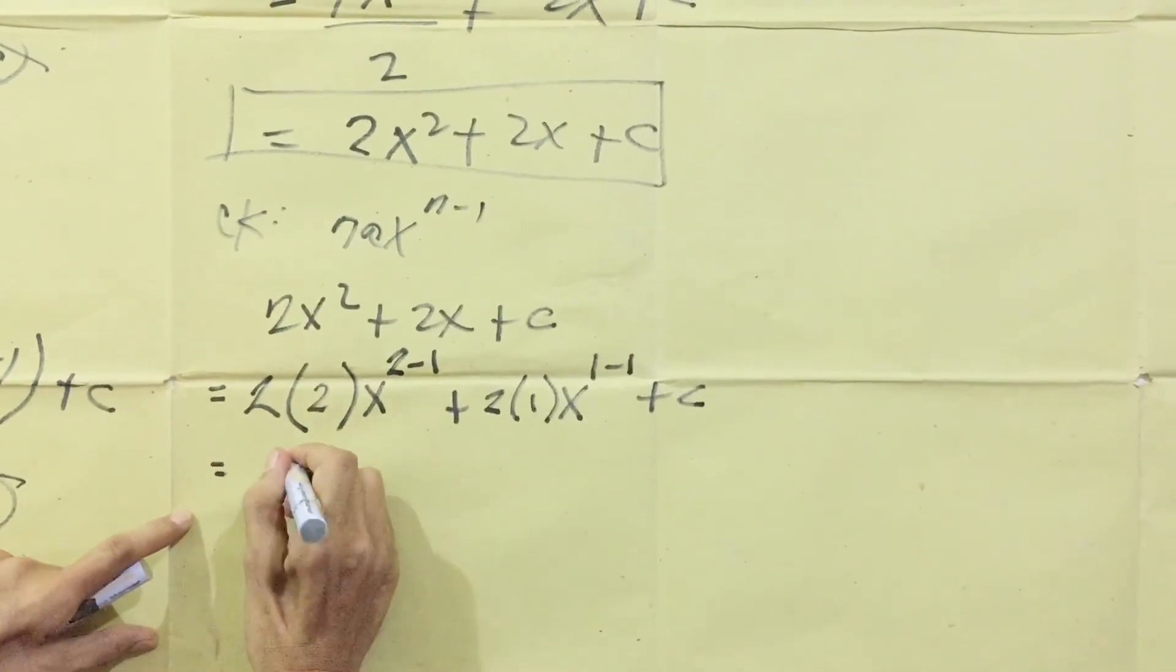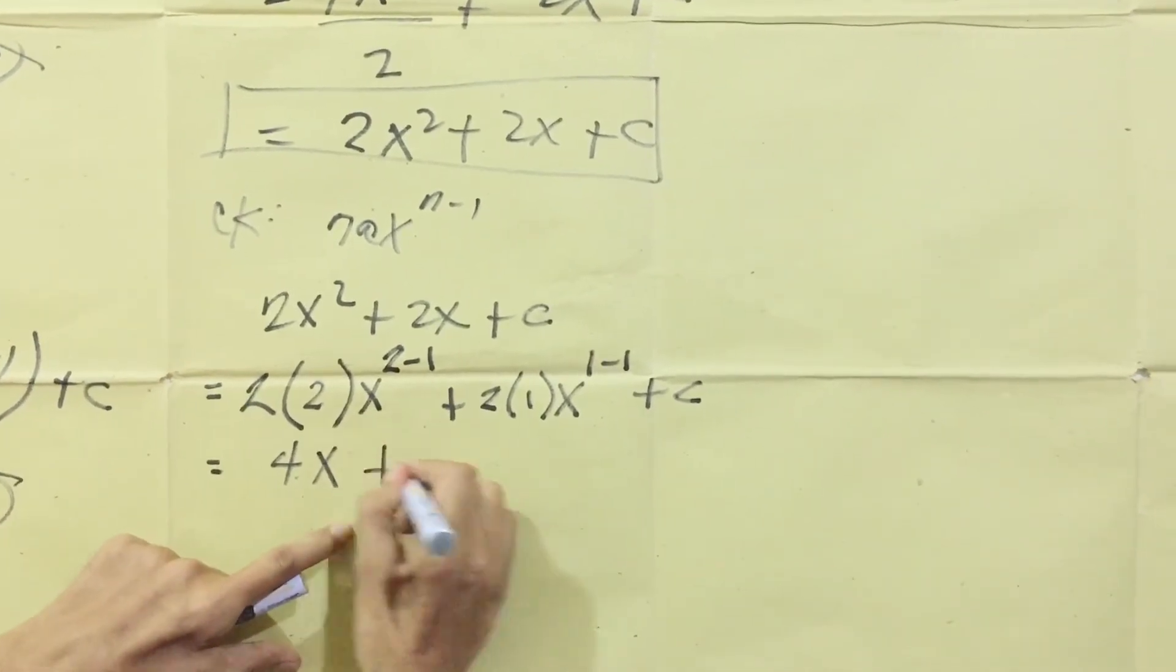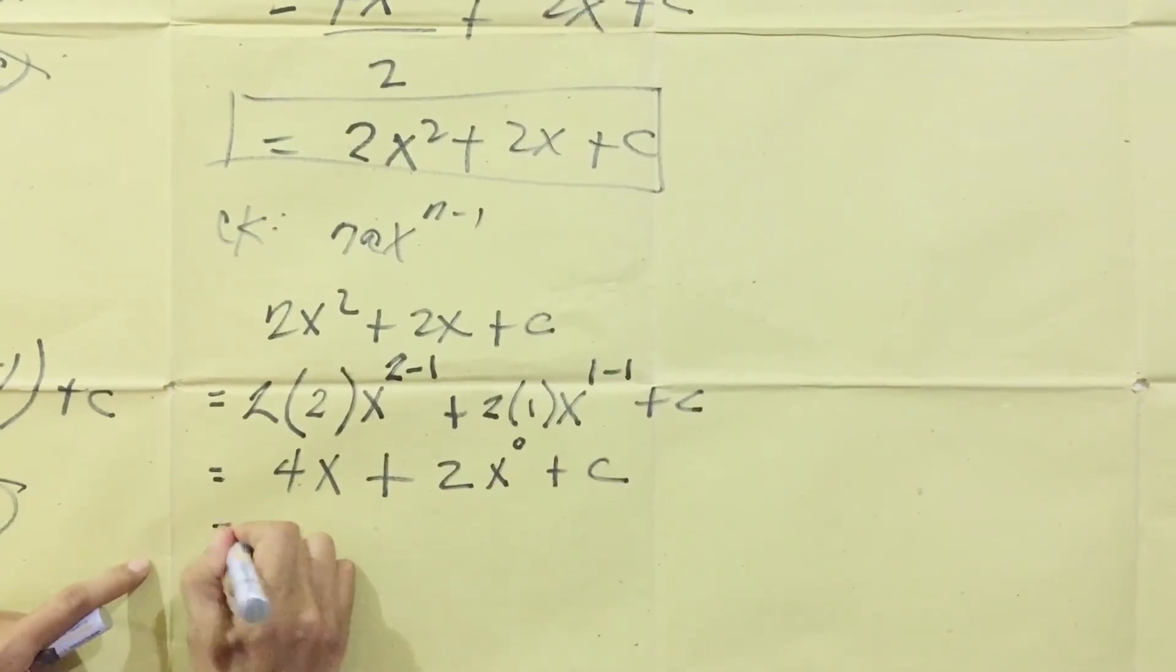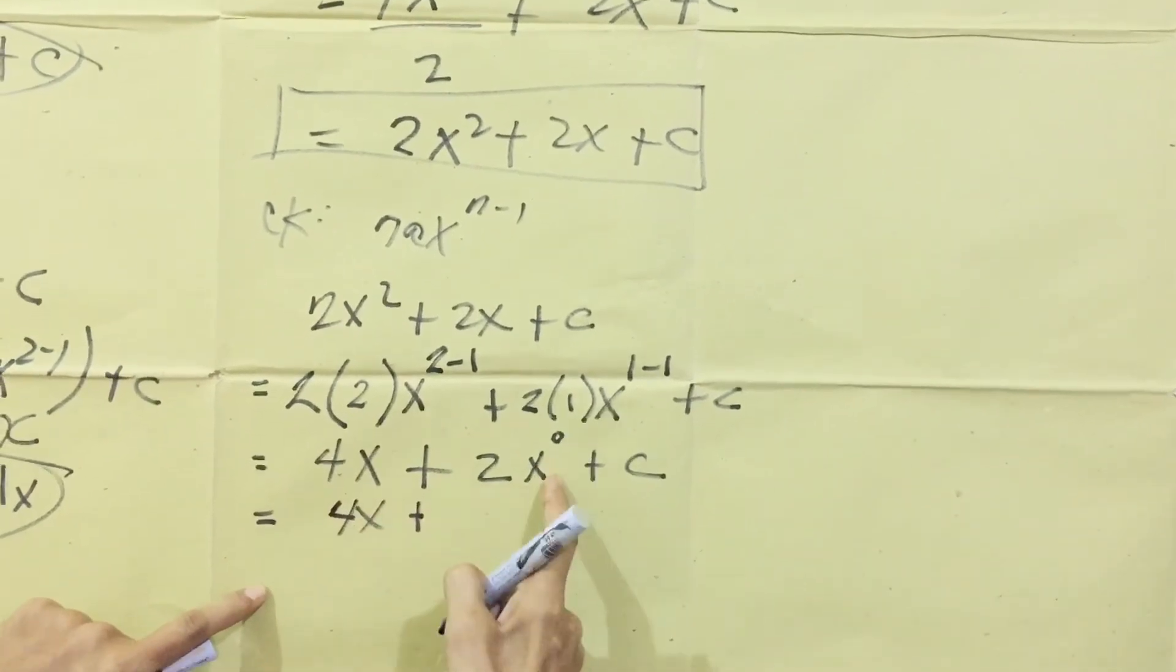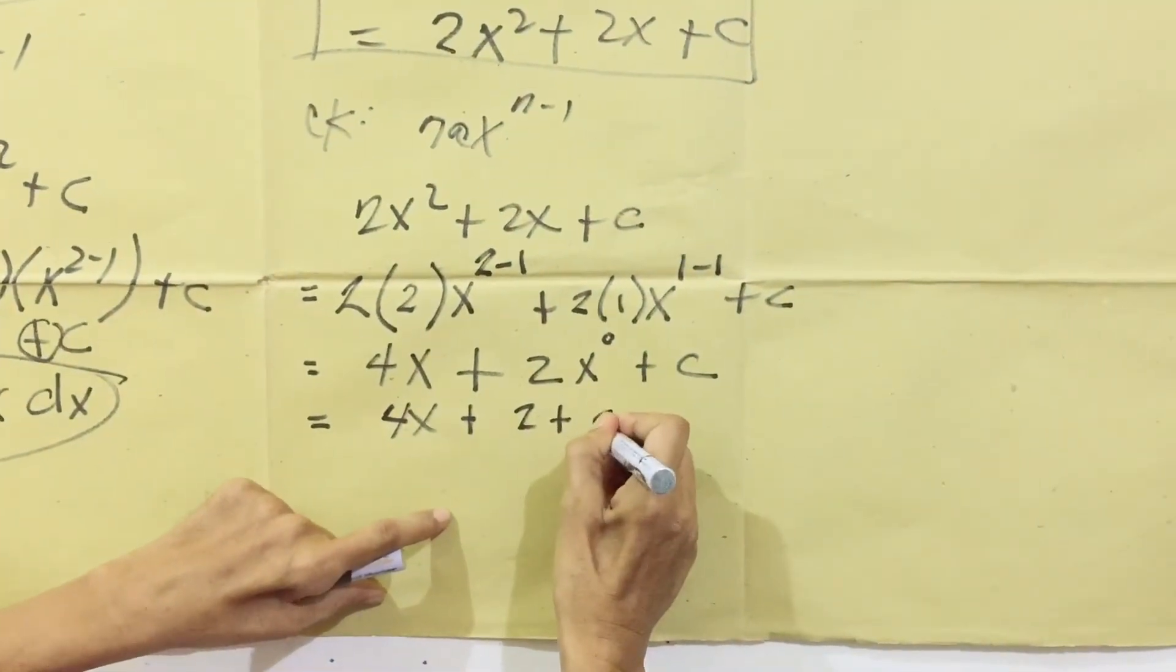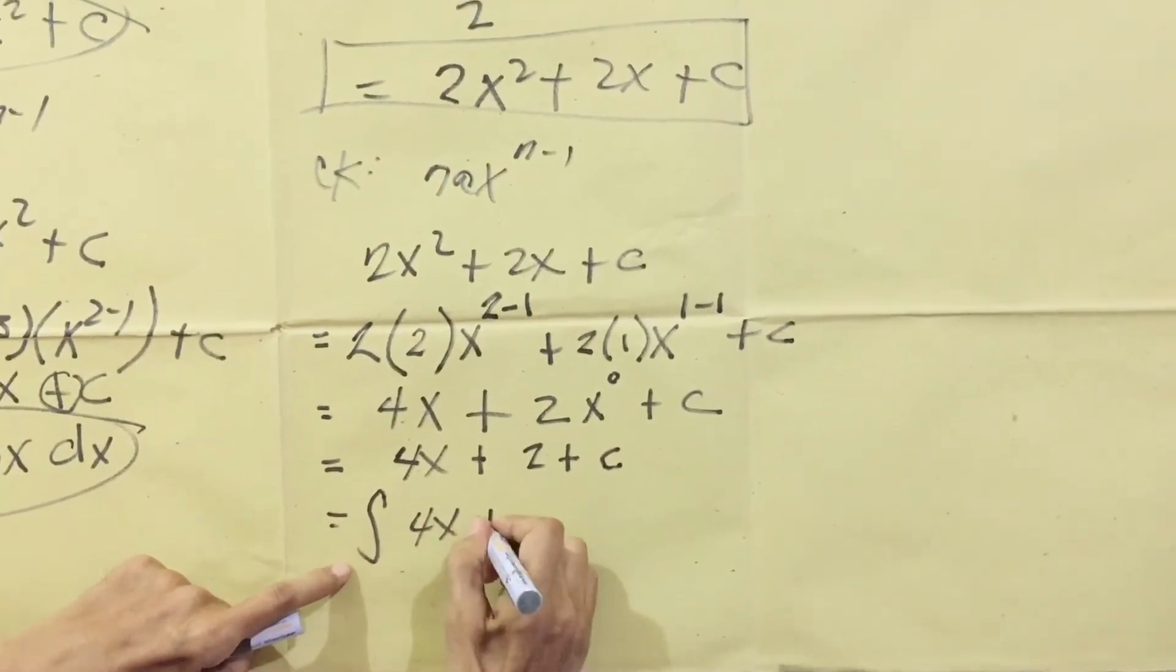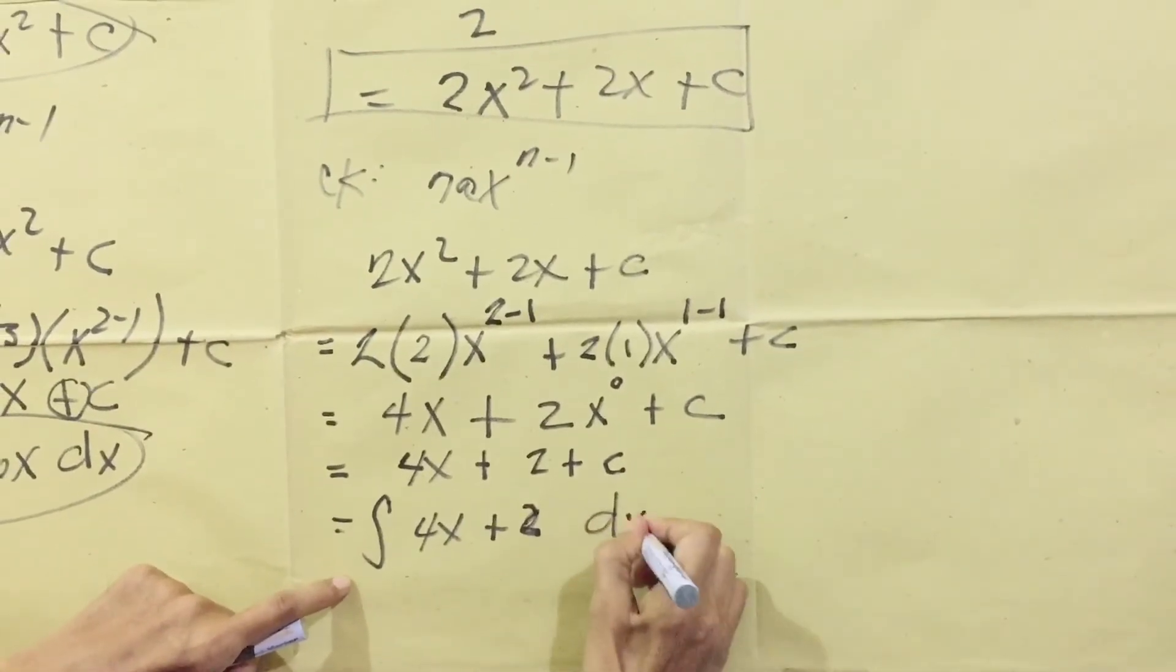Equals two times two, four, two minus one, X remaining, plus two times one, two, X, one minus one, X raised to zero, plus C. Then simplify again, four X plus any number with zero exponent equals one, times two equals two, plus C. Then addition, we change this to integral sign. Then four X plus two, and the constant changed to DX. Two terms use parentheses.